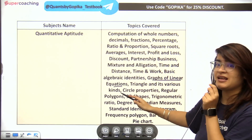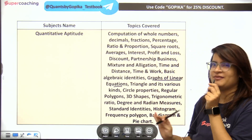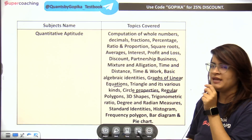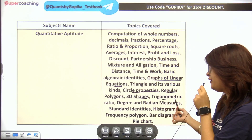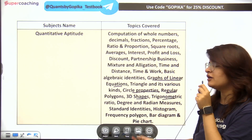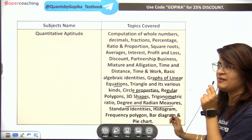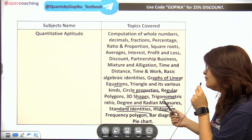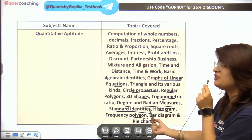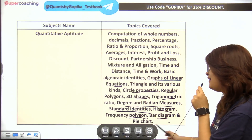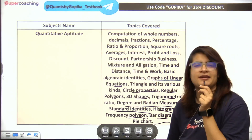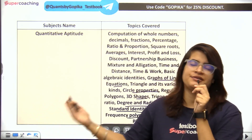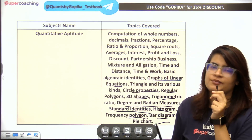Further topics include: triangles and their various kinds, geometry, circle properties, polygons, 3D shapes, trigonometric ratios, degree and radian measures, standard identities, histograms, frequency polygons — this is the statistics part — bar diagrams, pie charts, DI included, and statistics including mean, mode, and median.